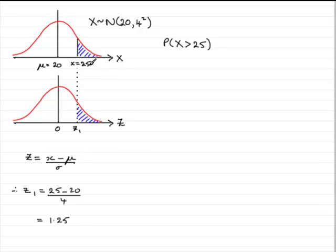In other words, 25 is 1.25 standard deviations above the mean. That's what this is telling us.